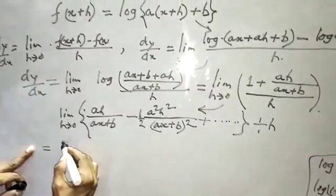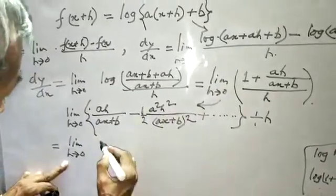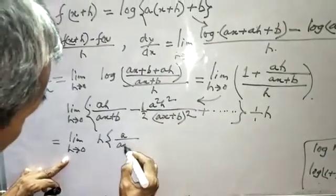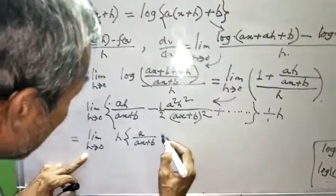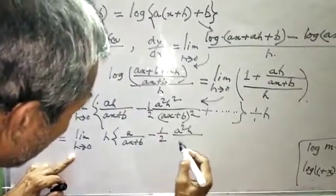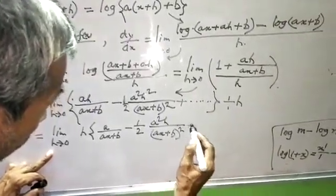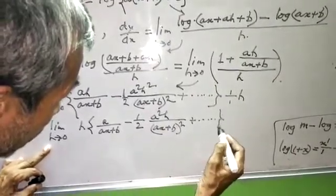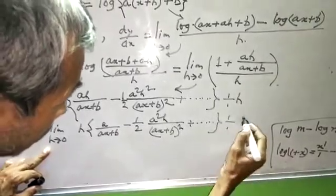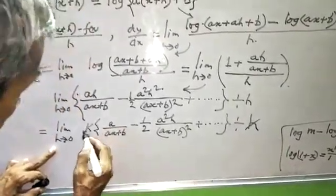Take h common from the numerator: limit h tends to 0 of h times [a/(ax + b) minus (1/2) a² h/(ax + b)² plus dot dot dot] divided by h. H and h cancel out.